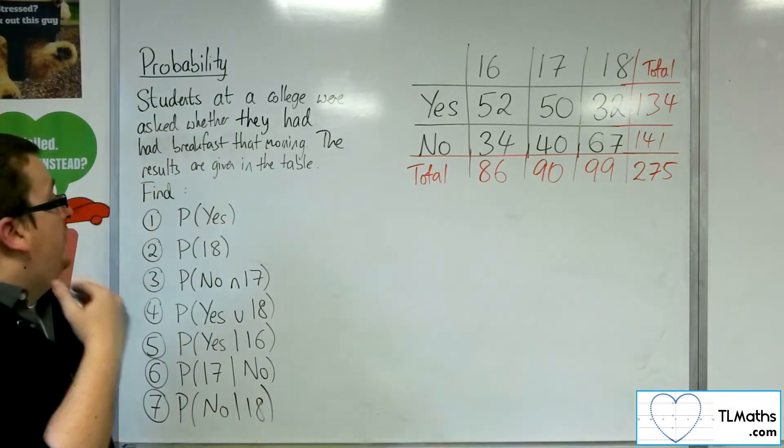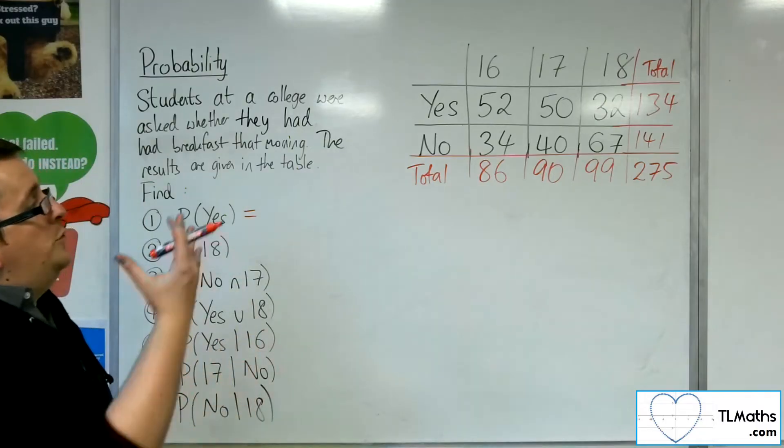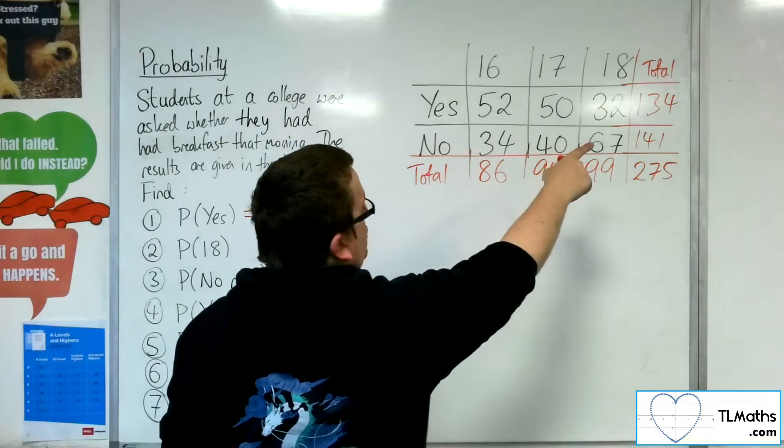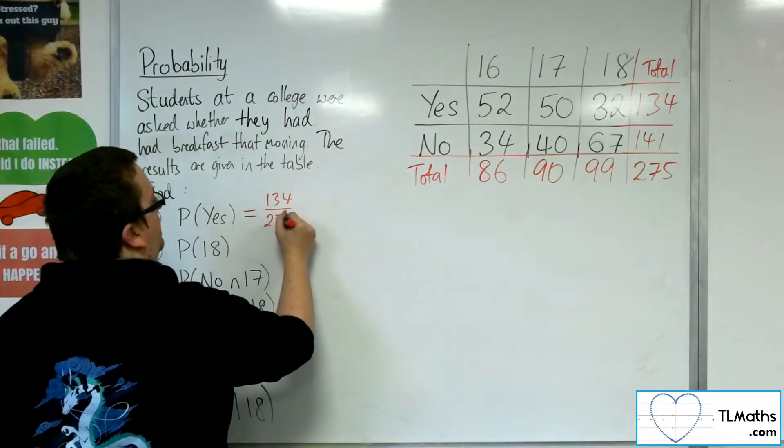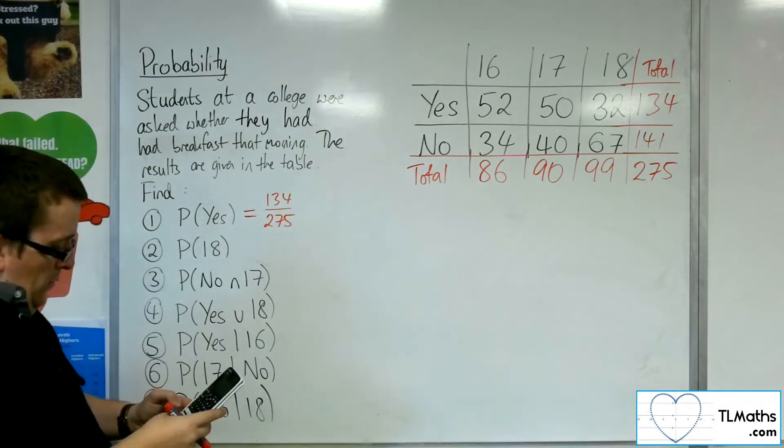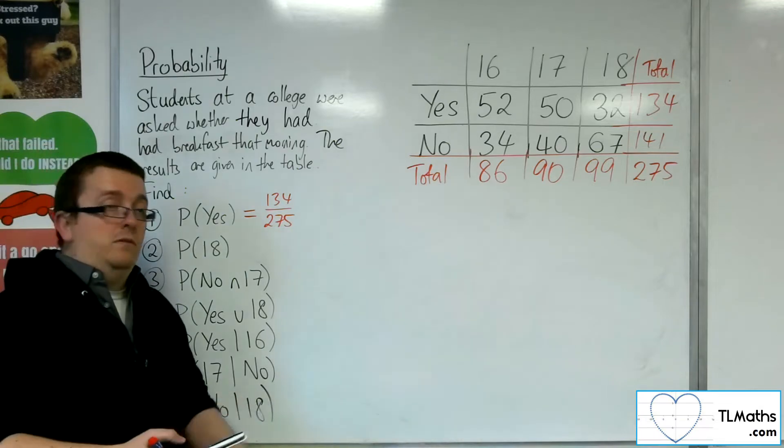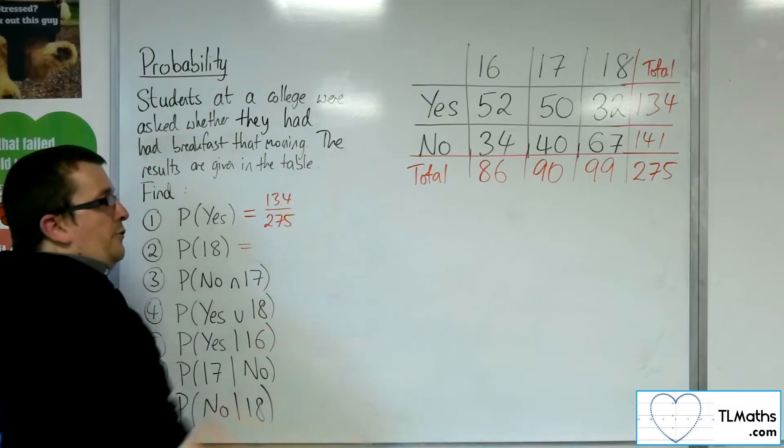Okay, so that's the first thing. So the probability of choosing a student at random who said yes would be 134 students said yes out of 275. So that would be the probability. So as a decimal, that'd be 0.487. Okay, to 3 sig fig. But leaving it as a fraction is fine.